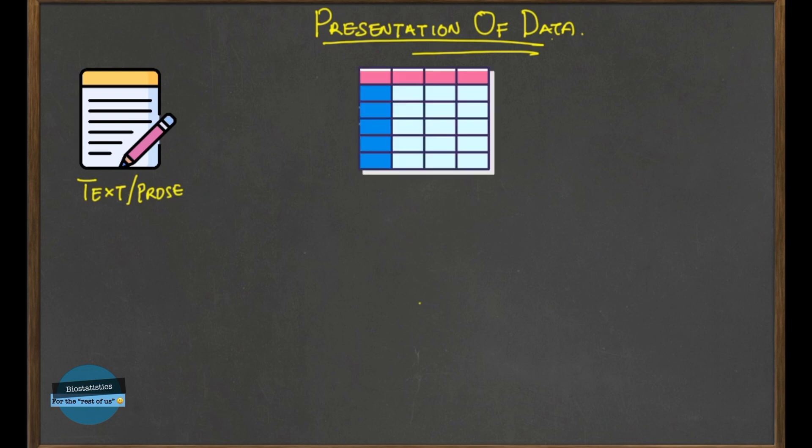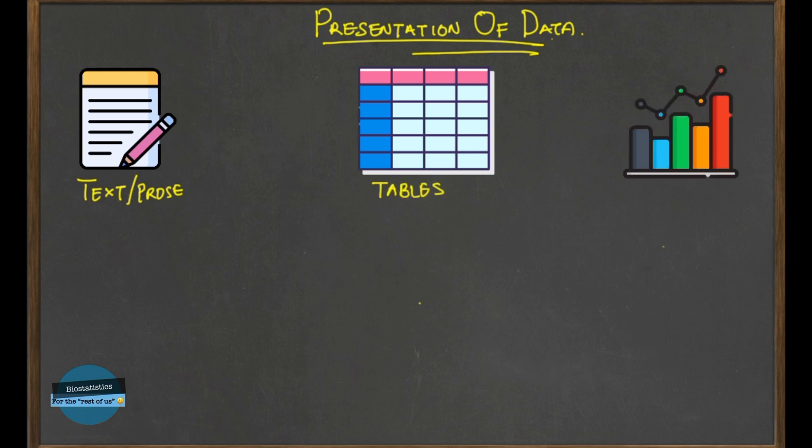The second way is using a tabular format in the form of tables — arrangement in rows and columns. And then the third way is using a graphical format, which is gaining popularity nowadays.